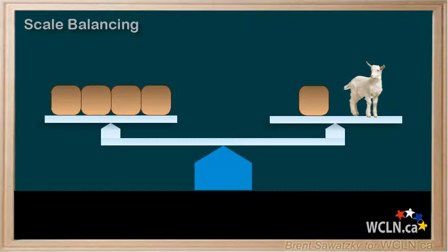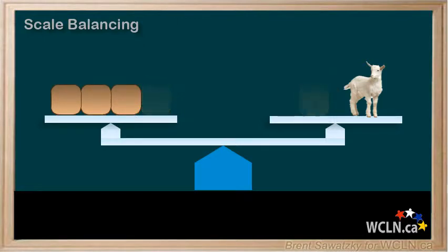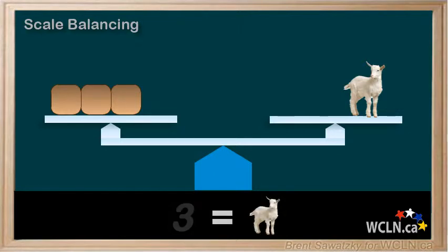Let's think of a nice method to prove how much this goat weighs. We know how a balance works: if we remove something from one side and then remove the same amount from the other side, it's still going to be balanced. So if we remove a block from each side, it's still balanced and it's a simpler puzzle. The result shows us clearly that the goat is equal to three blocks.